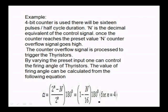A 4-bit counter is used, giving 16 pulses in a half cycle duration. N is the decimal equivalent of the control signal. Once the counter reaches the preset value N, the counter overflows. The overflow signal is processed to trigger the thyristor. By varying the preset input, one can control the firing angle of a thyristor. The desired firing angle can be set by selecting a suitable value for N. The firing angle is calculated as: alpha = (2^n − N) / 2^n × 180 degrees.